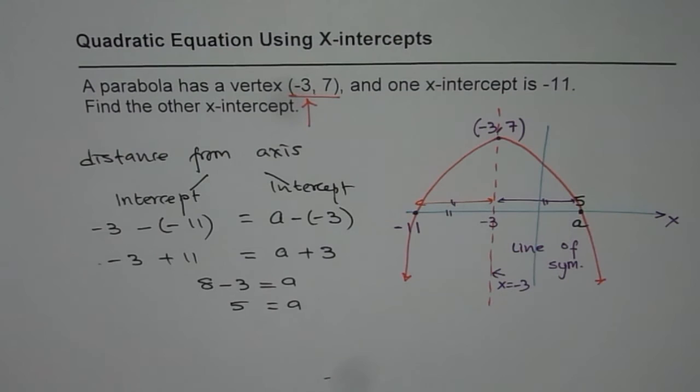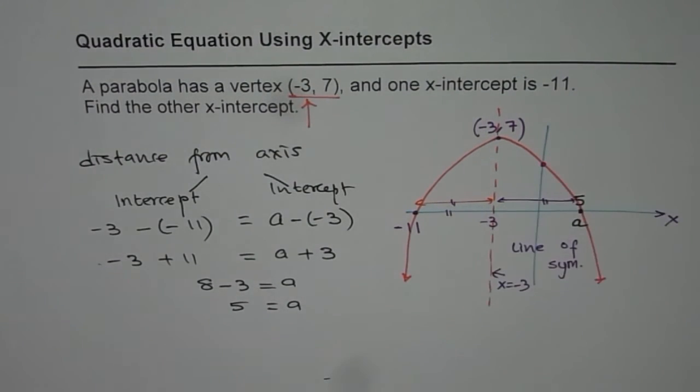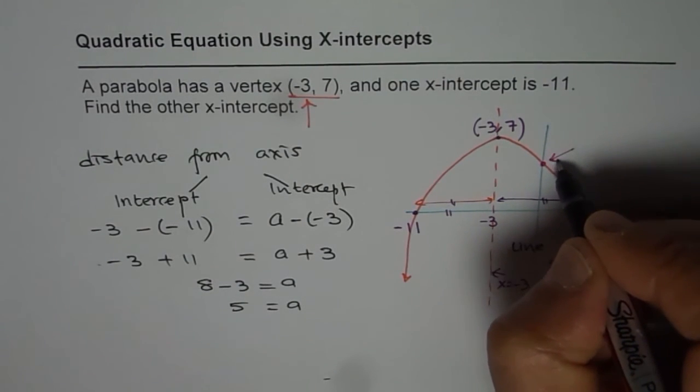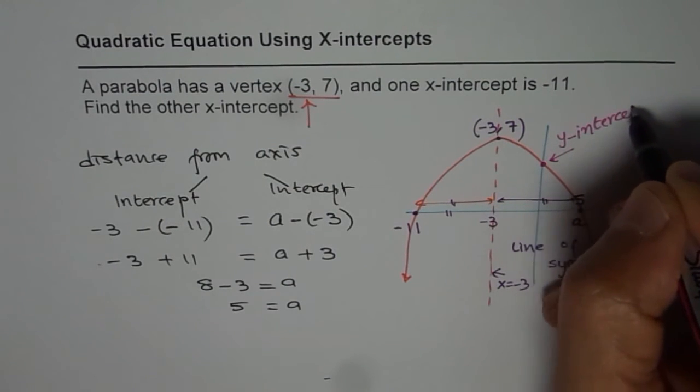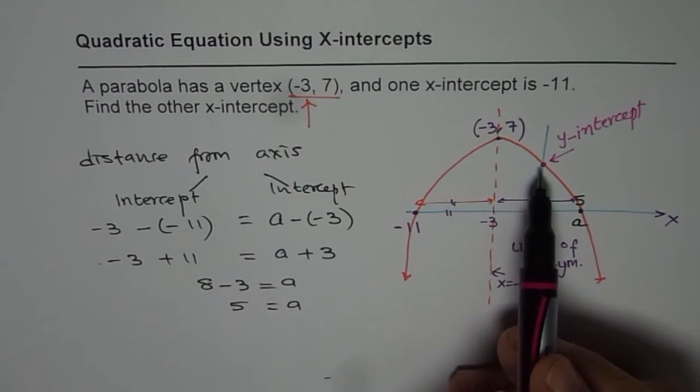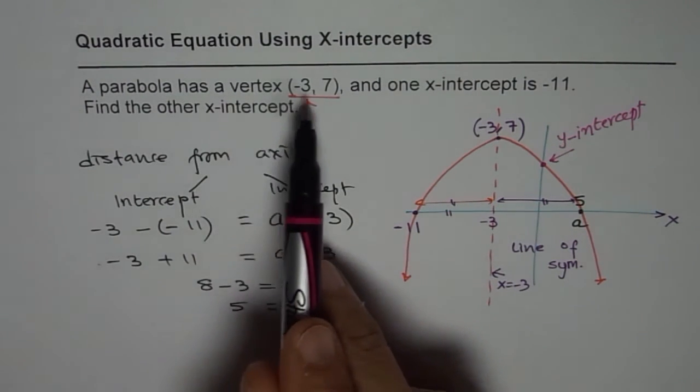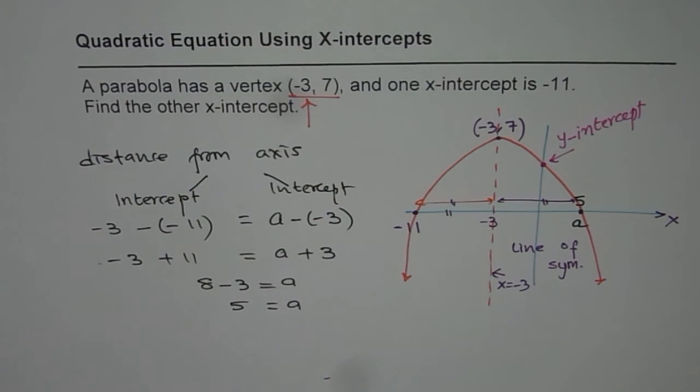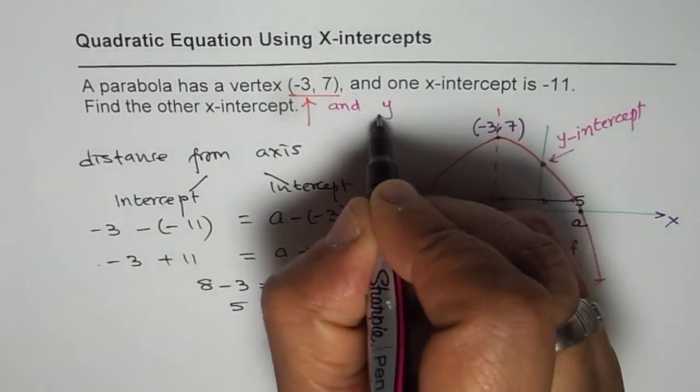Now a difficult question for us is how are you going to find the y-intercept? So that is a question for you to solve. Think about it. How can we find y-intercept in this scenario? That is my next question for you: a parabola has a vertex (-3, 7) and one x-intercept is -11. Find the other x-intercept and y-intercept.